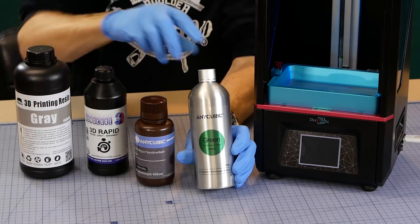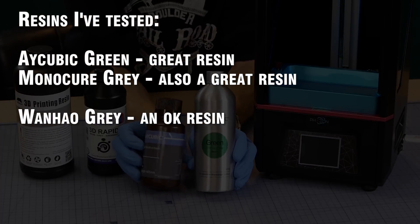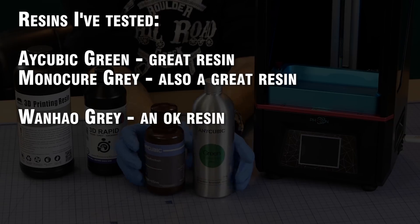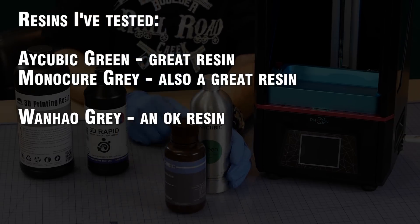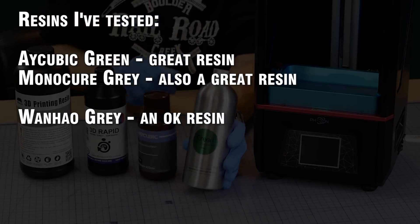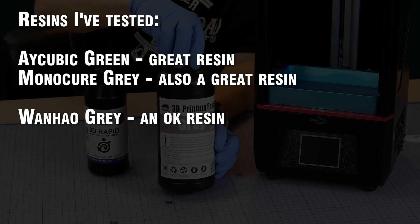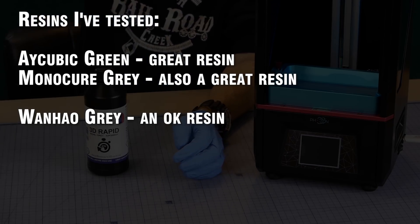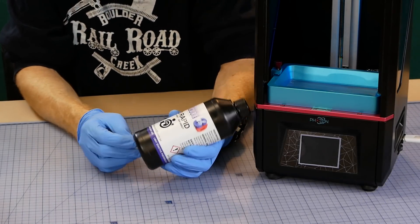There are a few options for resin choice. The Anycubic green resin works very well and it comes with the printer. I haven't had any problems with it so far. The Monocure Grey also works well however it needs slightly longer curing times due to the opaqueness compared to the clear green resin.